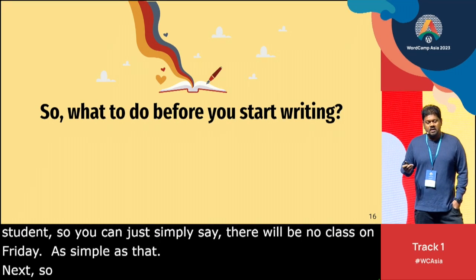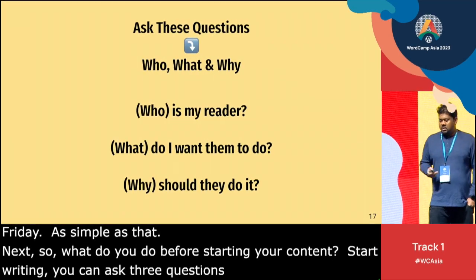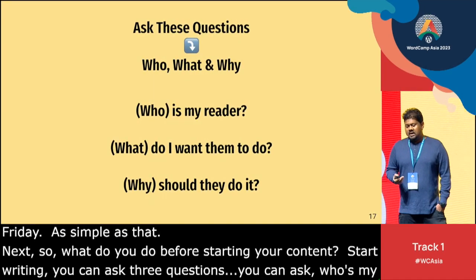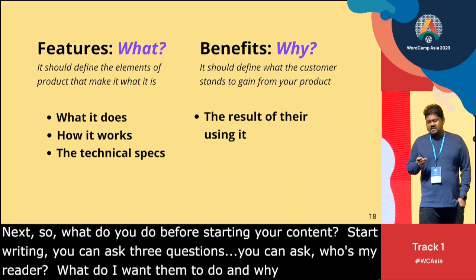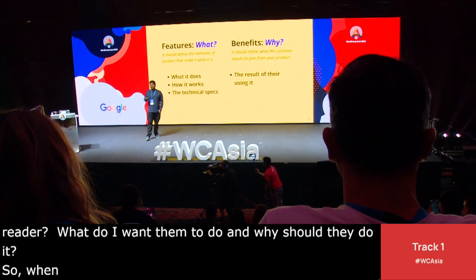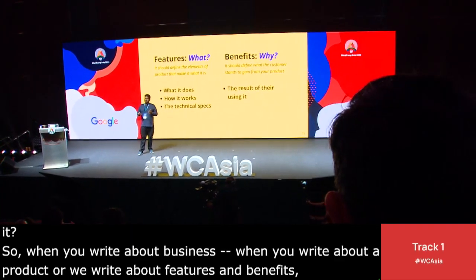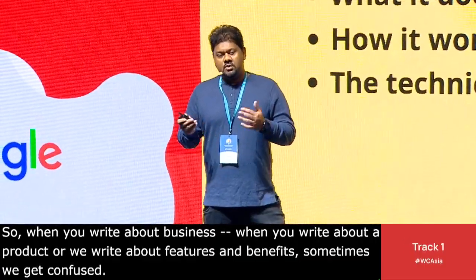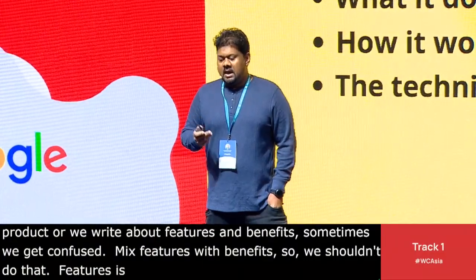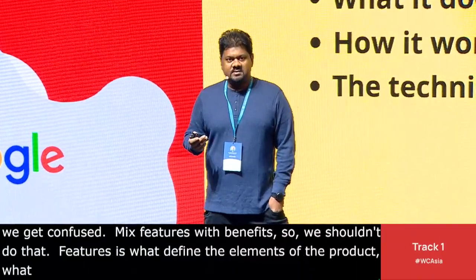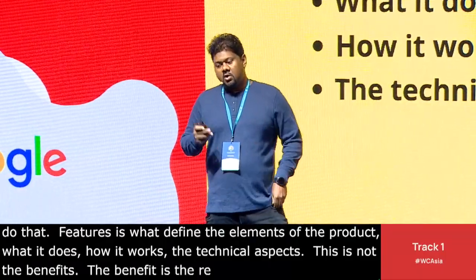Before starting to write content, you can ask three questions: Who is my reader? What do I want them to do? And why should they do it? When you write about a product or something, we write about features and benefits, and sometimes we get confused — we mix features with benefits. We shouldn't do that. Features define the elements of the product: what it does, how it works, the technical specs. That is not the benefits. The benefits is the result of using it. So you should structure your content based on that.